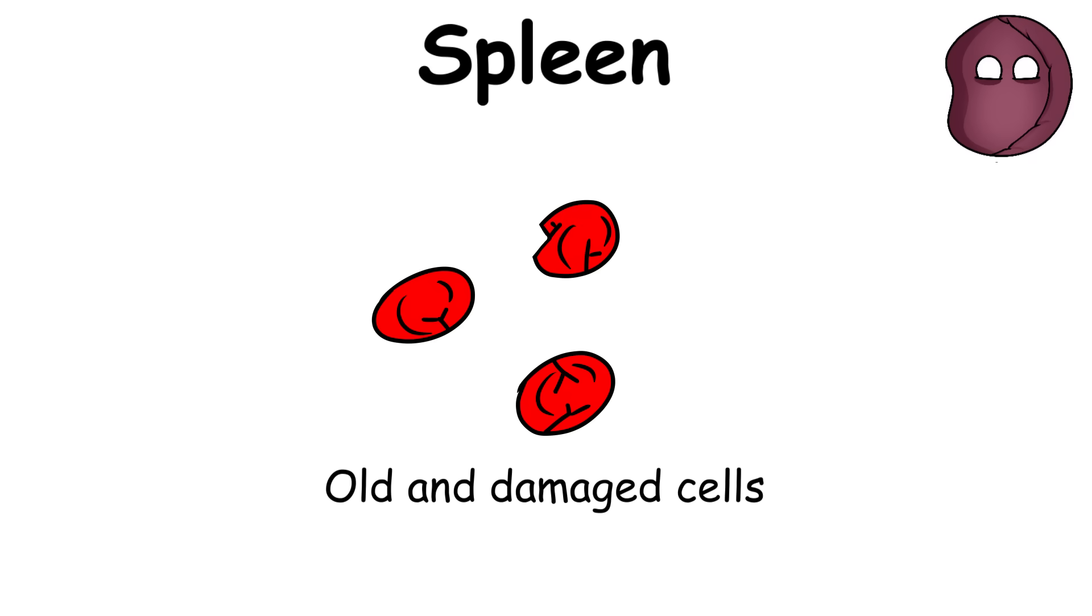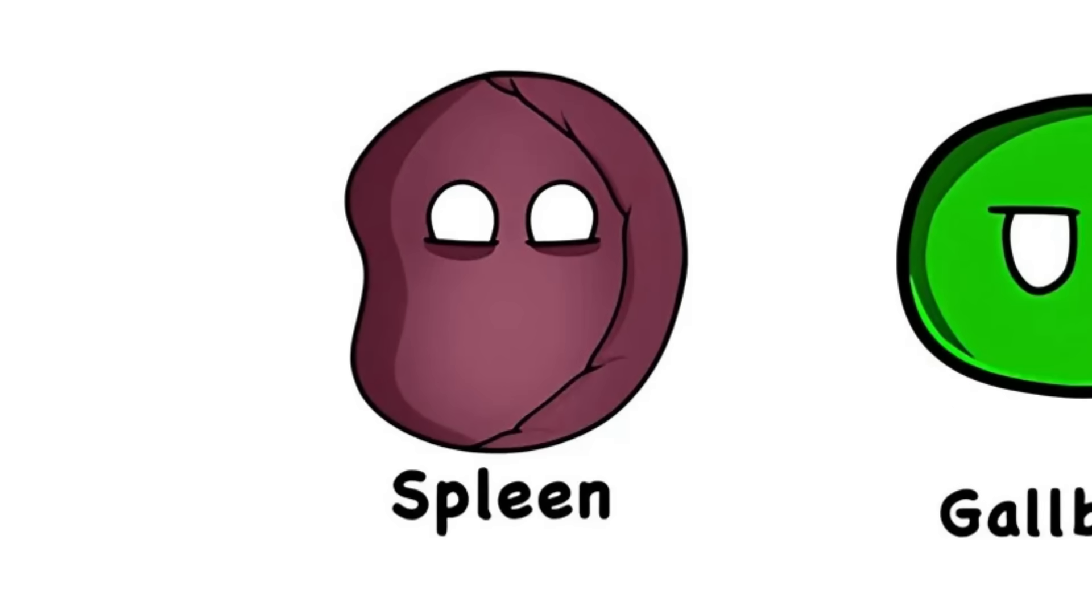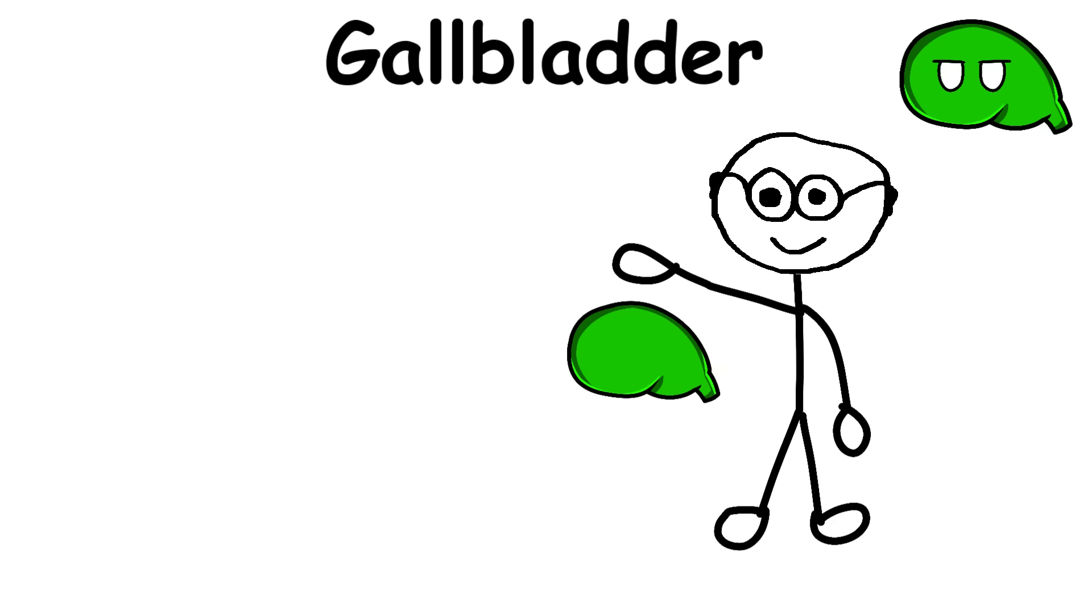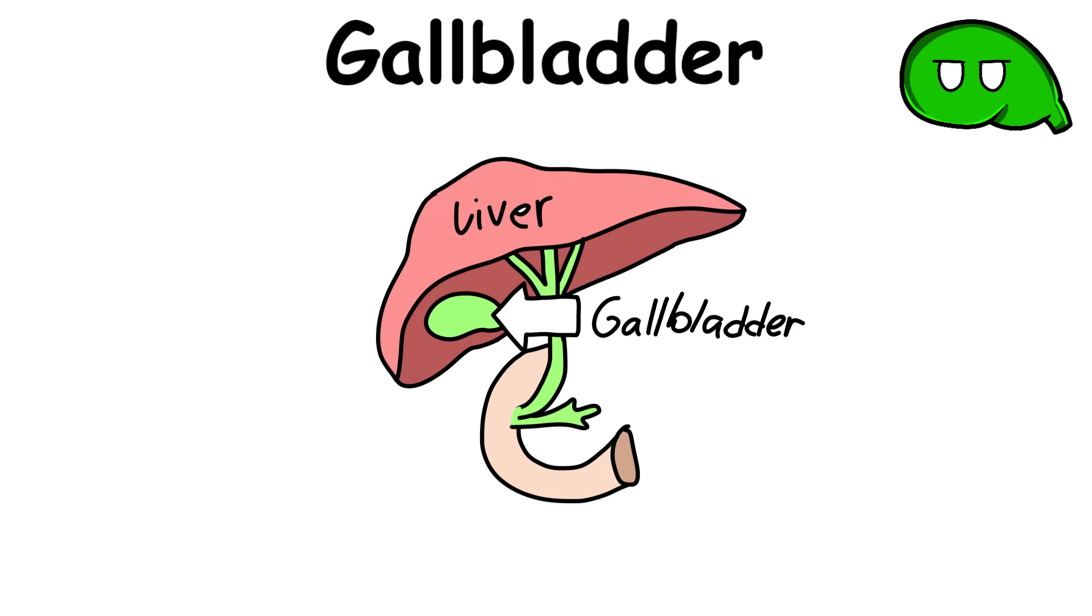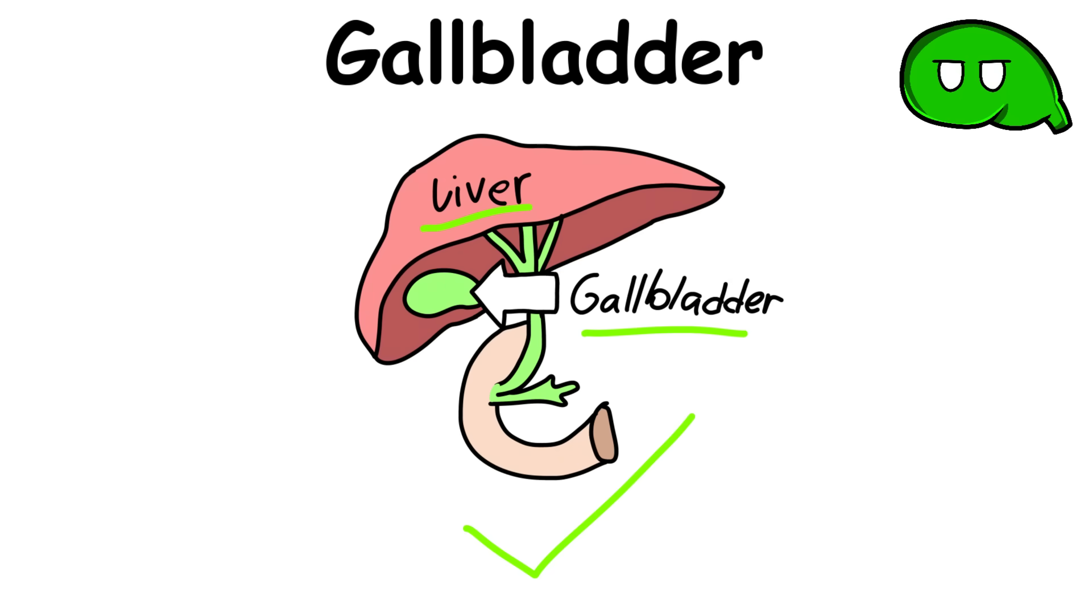The gallbladder is a small pear-shaped organ found in the upper quadrant of the abdomen, just next to the liver. While it isn't a vital organ, the gallbladder works together with the liver. It is responsible for storing and releasing the bile that the liver produces.